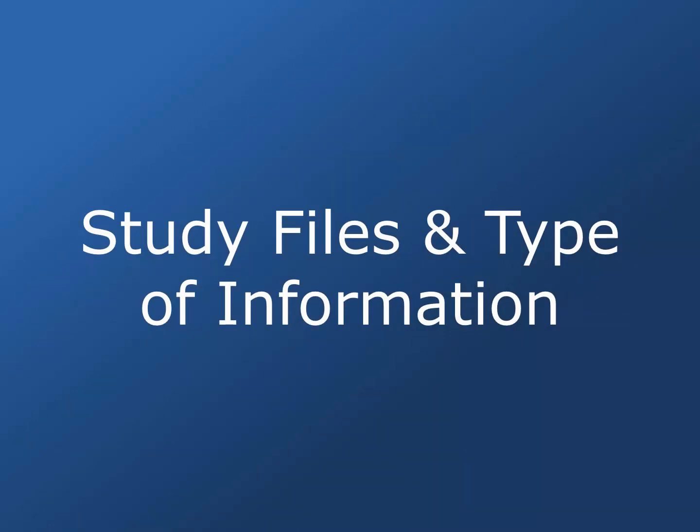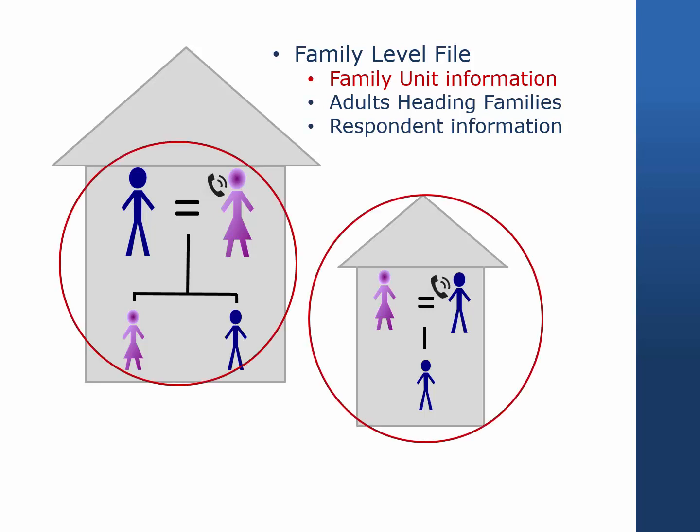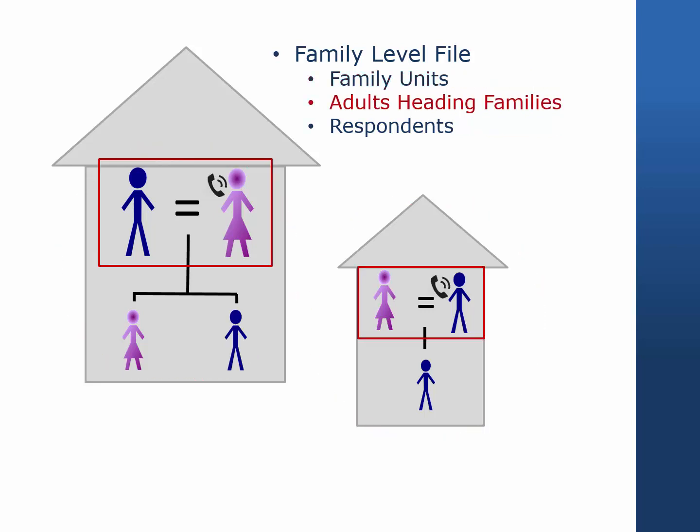Let's turn to a description of the structure of the main PSID files and how to tell for whom variables have been collected. From the main interview, the PSID produces two files: a family-level file and an individual-level file. The family-level file contains three types of information: information collected about the family unit as a whole, information about the adults heading families, and a few variables that are only available for the respondent. These respondent-only variables include psychological variables that measure life satisfaction and psychological distress, as these types of questions are not well answered by proxy and are not asked about the respondent's spouse or partner.